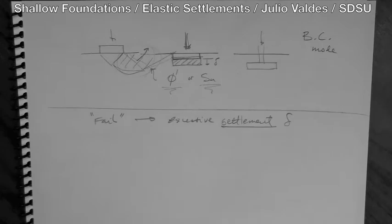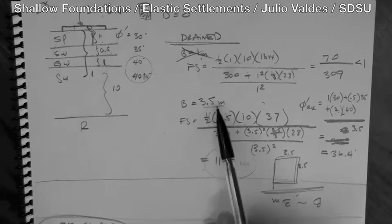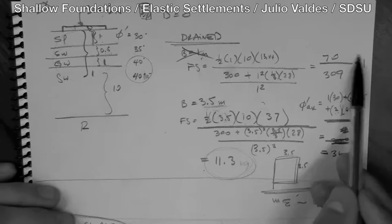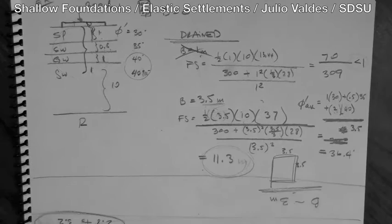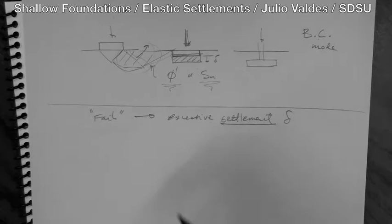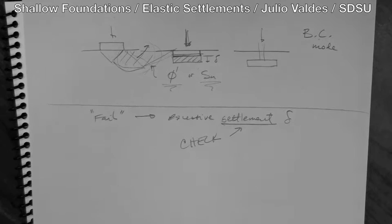That settlement is called delta. So when we design a foundation — we have designed foundations so far where B has to be, for example, between 1 and 3.5 meters — once you decide on a foundation size, say 2 meters by 2 meters, you need to check if the settlement for that foundation and that load will be acceptable.